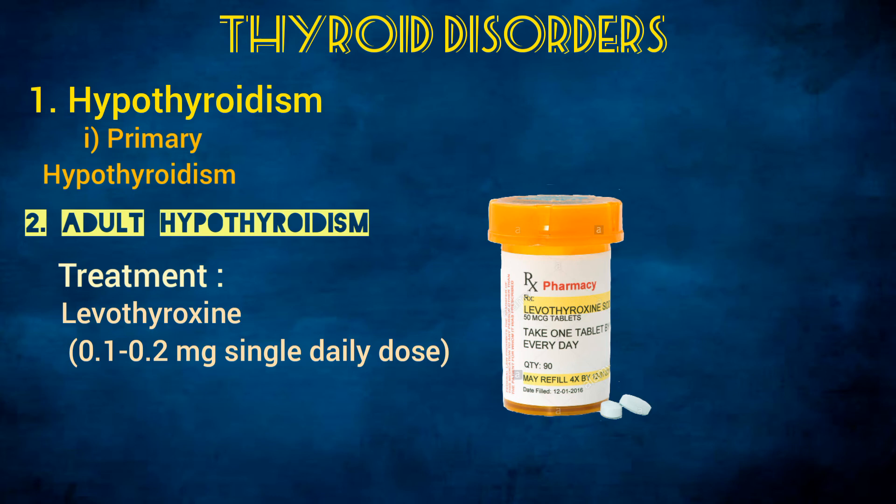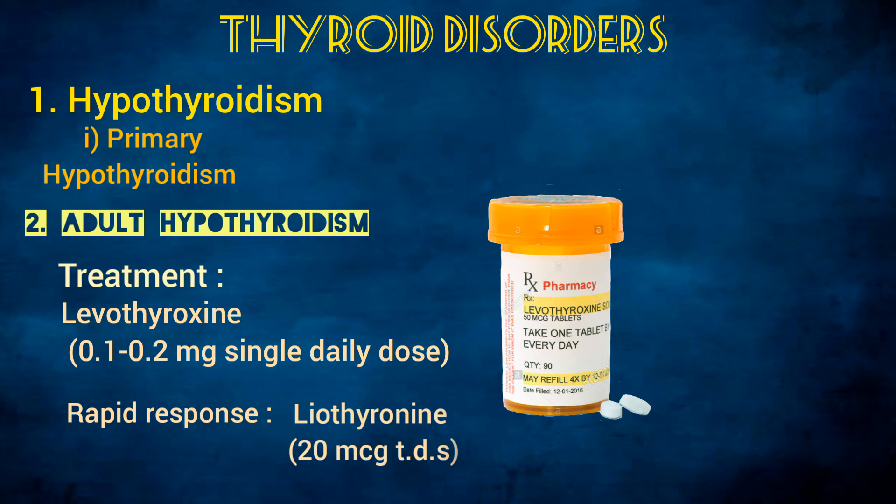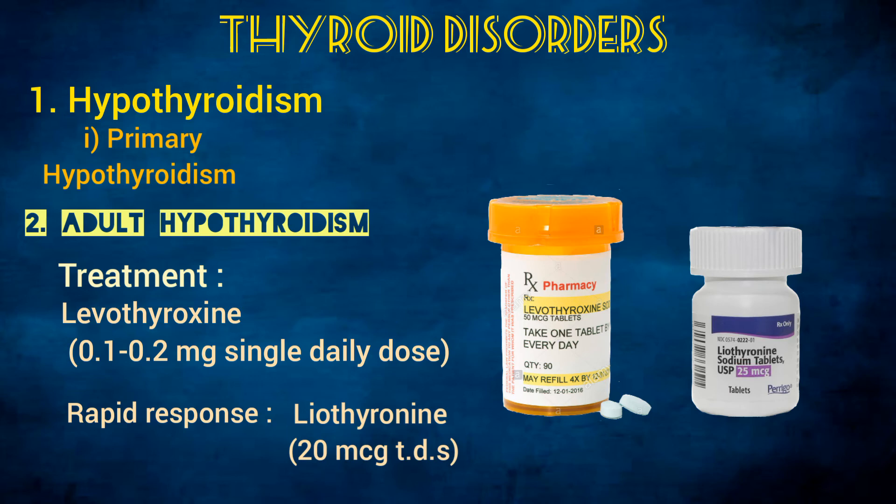Treatment is given with oral thyroxine or levothyroxine, 0.1 to 0.2 mg as a single daily dose. If a rapid response is required, triiodothyronine or liothyronine can be used at a dosage of 20 micrograms three times daily.